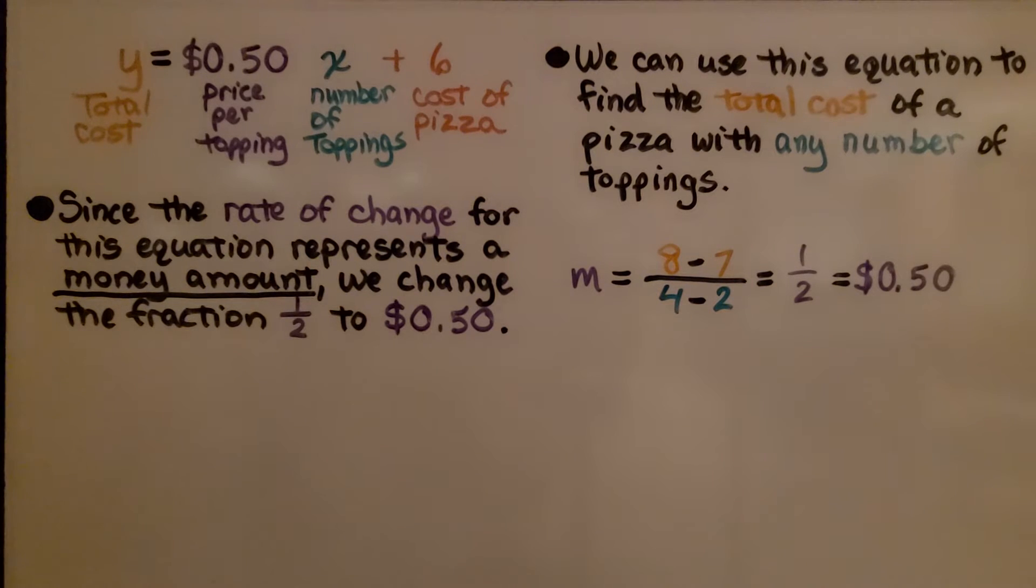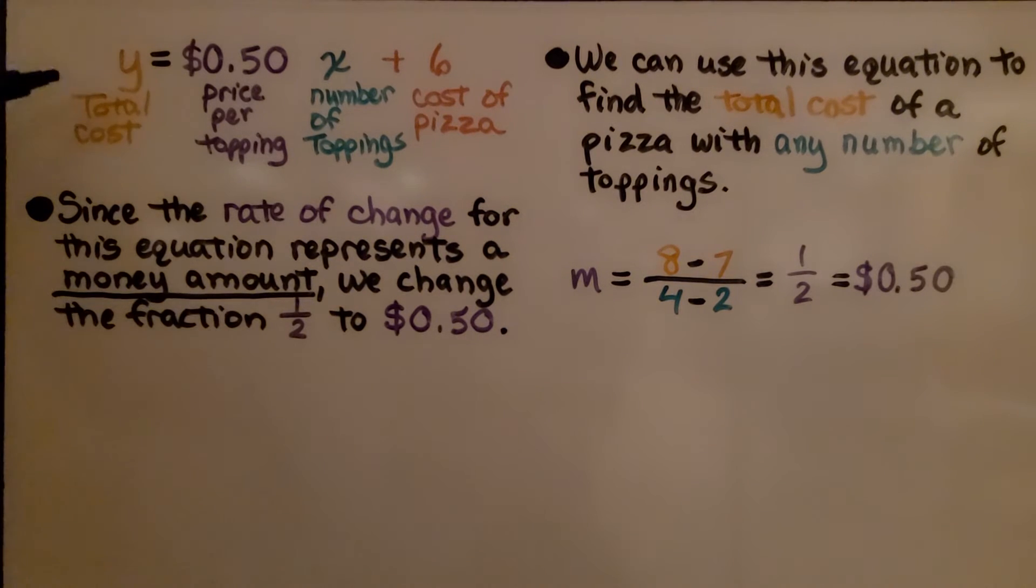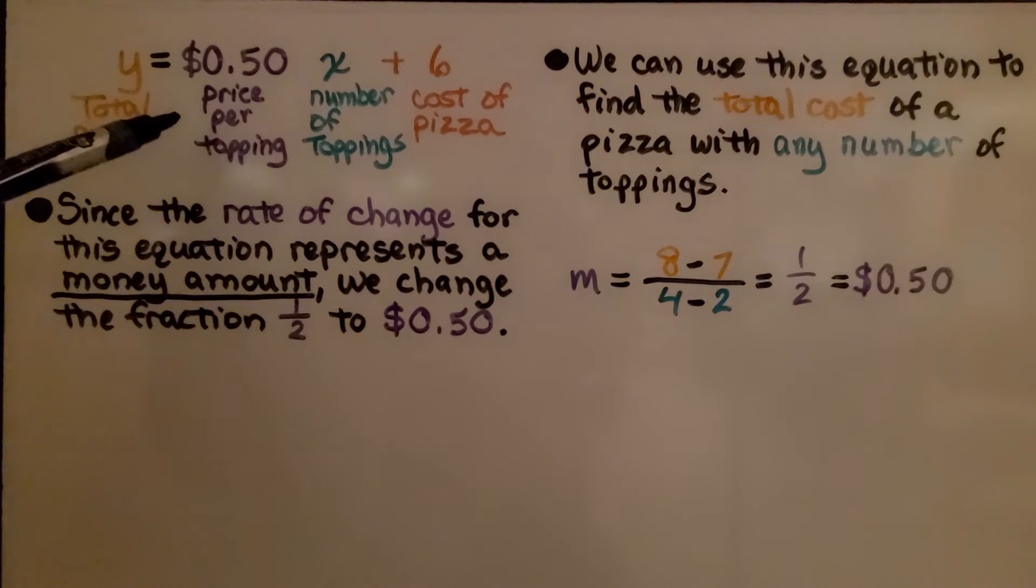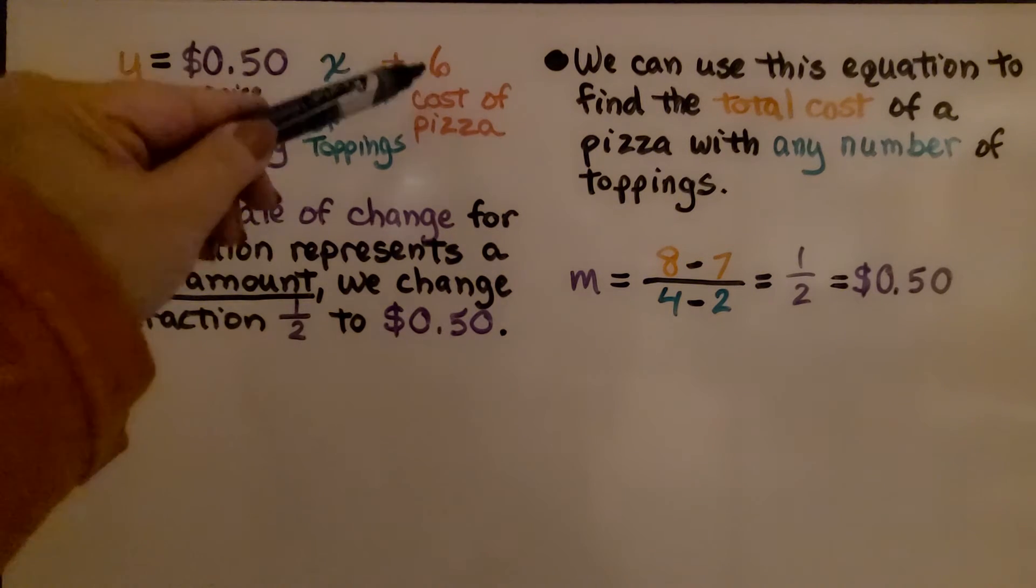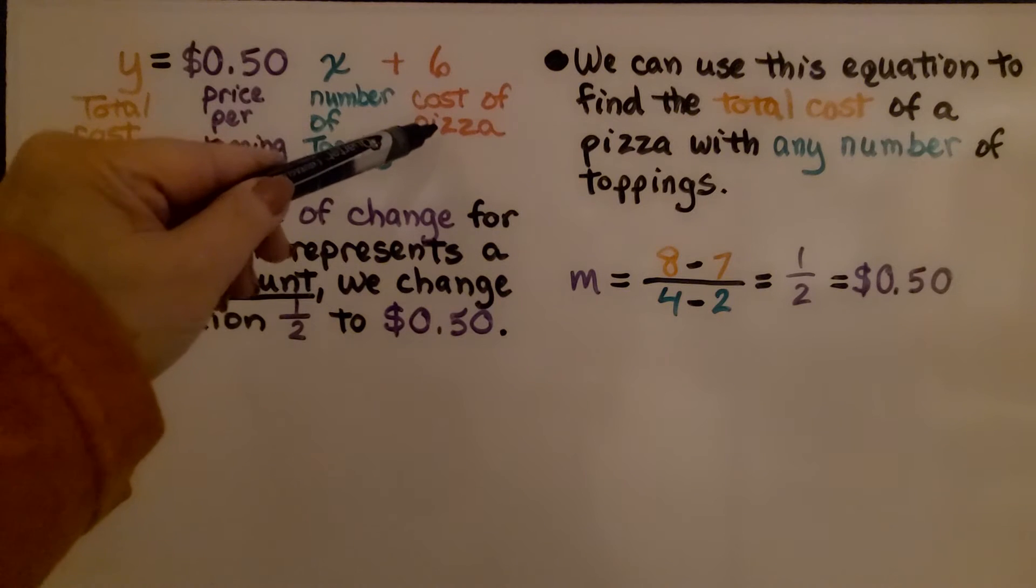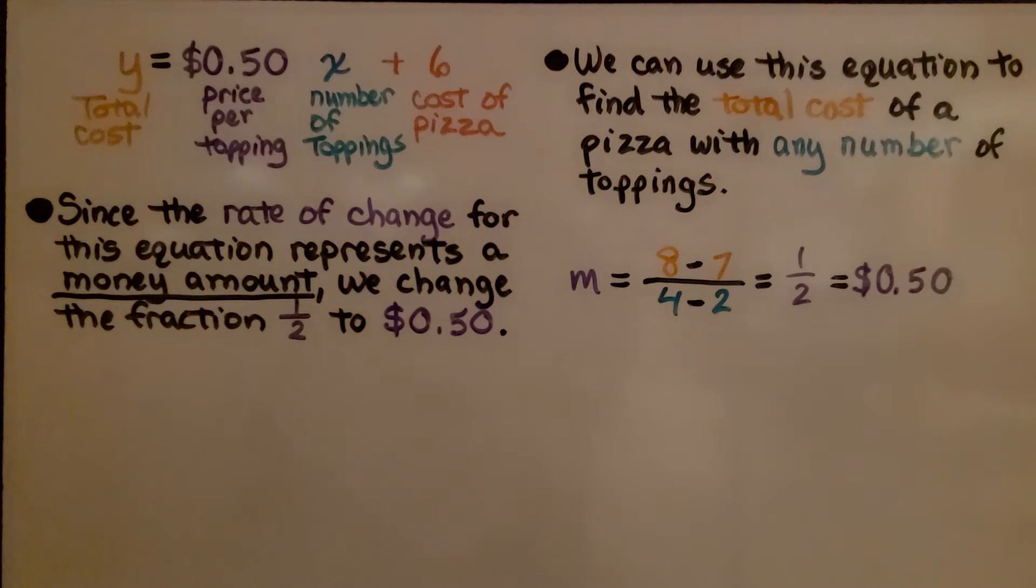Be careful with your rates of change. We have y is our total cost, 50 cents is the price per topping, x is the number of toppings, and $6 is the base cost of the pizza, the initial cost of the pizza.